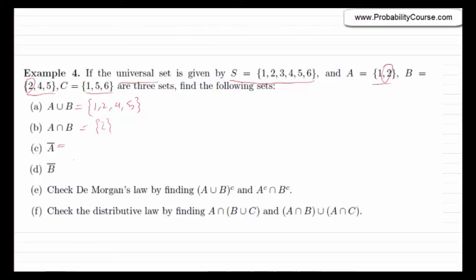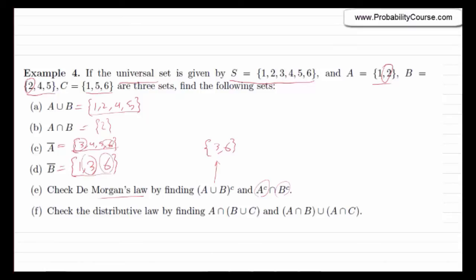Now what is A complement? A complement consists of all elements in S but not in A, which gives {3, 4, 5, 6}. B complement is {1, 3, 6}. The next question checks De Morgan's law by finding these two expressions. We already found A ∩ B = {2}, so its complement is {3, 6}. A complement is {3, 4, 5, 6} and B complement is {1, 3, 6}; their intersection is {3, 6}. So both sides equal {3, 6} — De Morgan's law is verified.